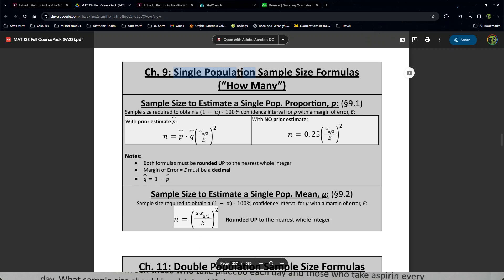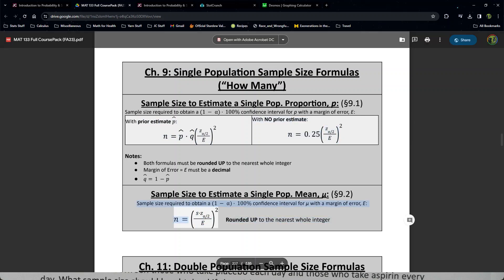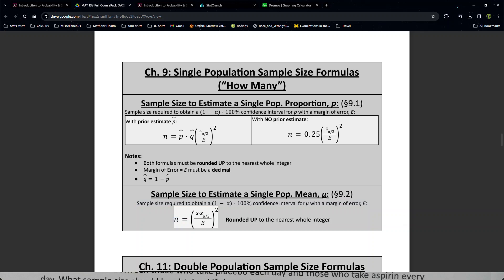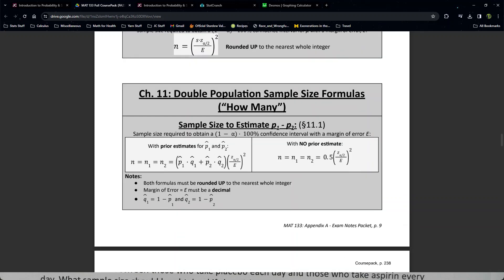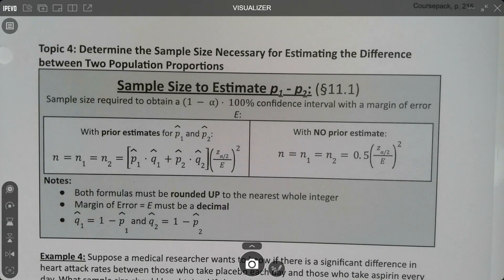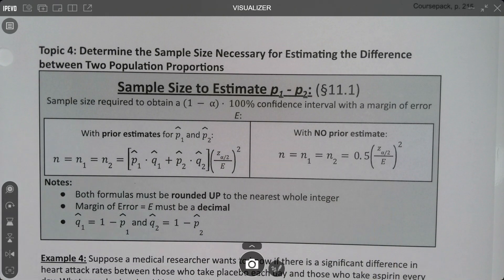So we had three formulas before. We had one for when we're estimating a proportion with a prior estimate, one when there was no prior estimate, and then sample size for a mean. Mean is kind of unique because we don't do a mean one for chapter 11. But now we have two new formulas that we want to learn. The one on the left is for proportions, the difference in two proportions when we have prior estimates, and the one on the right is when there's no prior estimate.